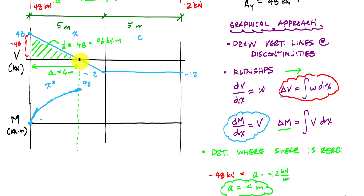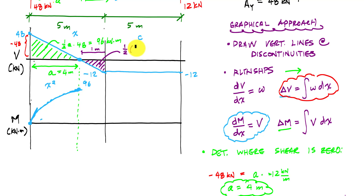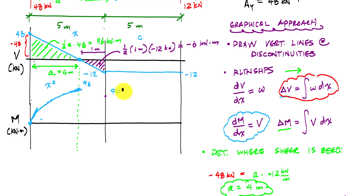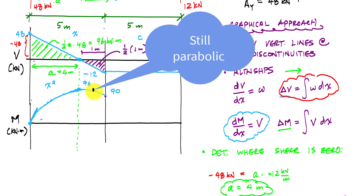Now going from the zero crossing to the next discontinuity at five meters: I'm starting at 96 and there's a negative area here. I knew A is 4 meters and the total length is 5, so this remaining piece is 1 meter. The area is one half times 1 meter times negative 12 kilonewtons, giving negative 6 kilonewton-meters. So the change in moment is negative 6 from 96, taking me down to 90 kilonewton-meters.